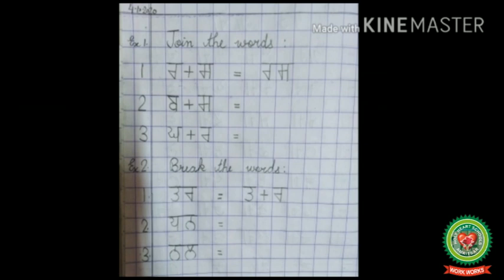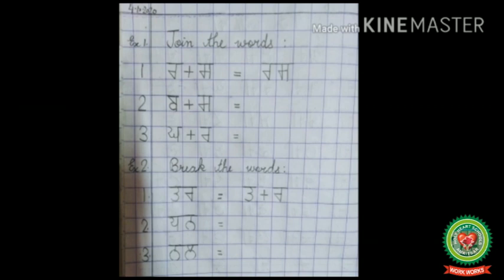Now look at the first number — I have done the first one for you. 'Tatta-rara' (tar) was written, and in this exercise we have to break the word. Two letters are given: tatta and rara. So we separate these letters — after the equals sign, leave one box and write 'tatta,' then a plus sign in the next box, then 'rara.' We have separated the two letters using the plus sign. The rest two you have to do by yourself.